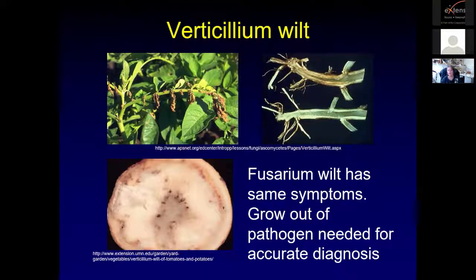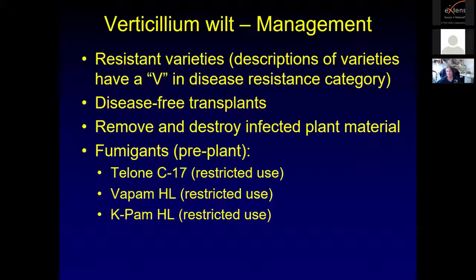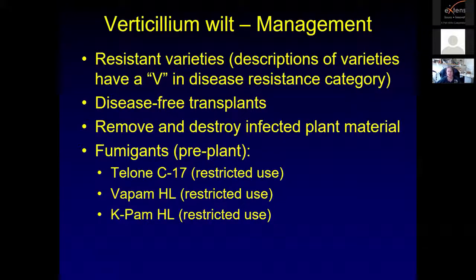Resistant varieties for both verticillium and fusarium are available. When looking up tomato or pepper varieties, resistant varieties will have a V in the disease resistance category for verticillium; for fusarium resistance look for FUS or similar designation. Plant disease-free transplants and avoid plants that are completely yellow. Remove and destroy infected plant material, as verticillium can survive 10 years in the soil living off dead plant material. Pre-plant fumigants are usually only an option for larger operations.